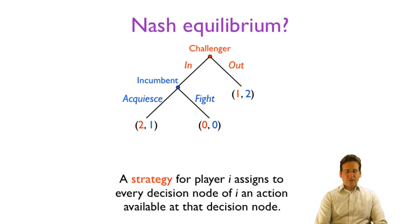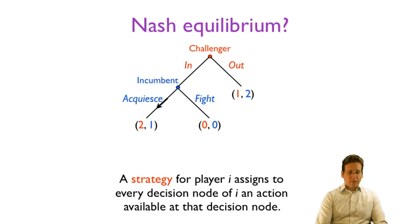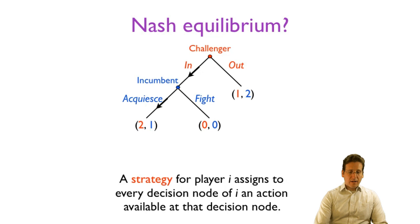How do we find a Nash equilibrium? One way is to start at the end of the game — this is called backward induction. That would mean we first ask what the incumbent would do if the challenger chooses to enter. The incumbent would have a choice between acquiescing and getting 1 or fighting and getting 0, so the incumbent will choose to acquiesce. Now the challenger has a choice between entering the market, knowing the incumbent will acquiesce and getting 2, or staying out and getting 1 — so the challenger will choose to enter. Therefore, 'in and acquiesce' is a Nash equilibrium.